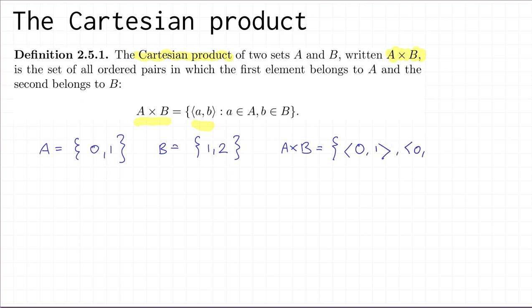And the first element could also be 1, in which case the second element could be 1 or the second element could be 2. So those are the four elements in the Cartesian product A × B.